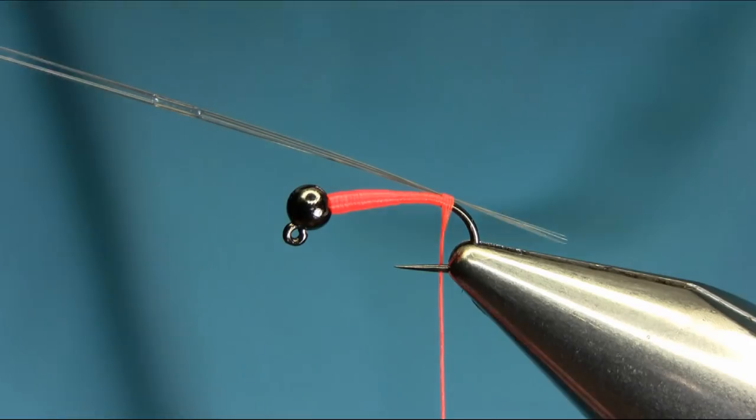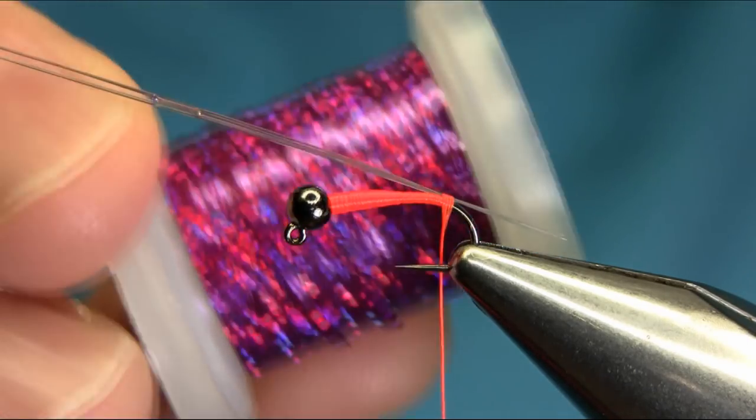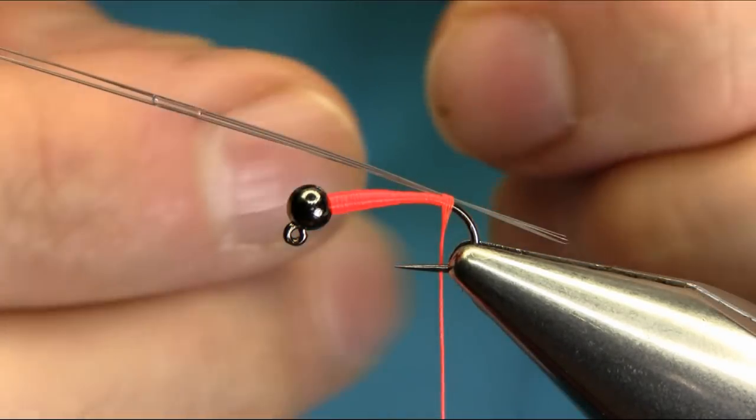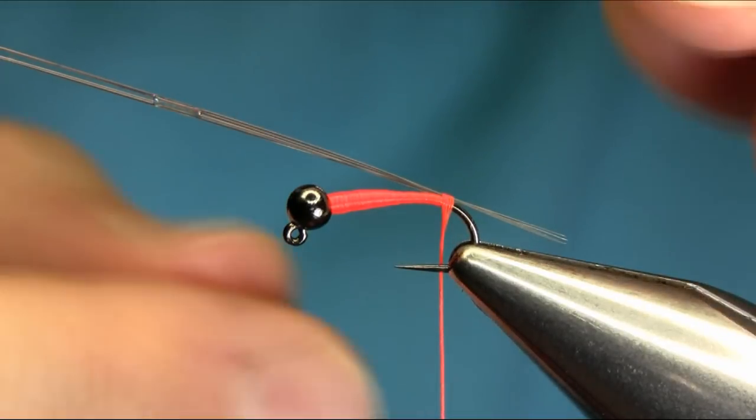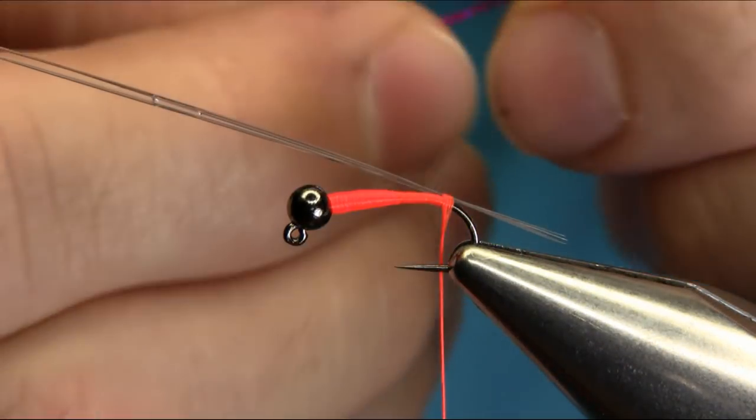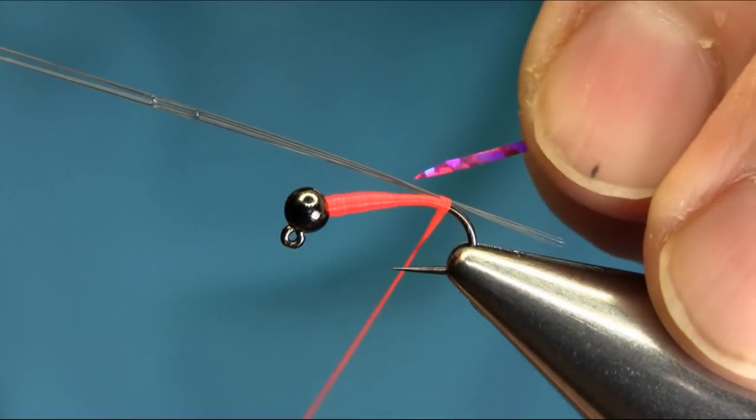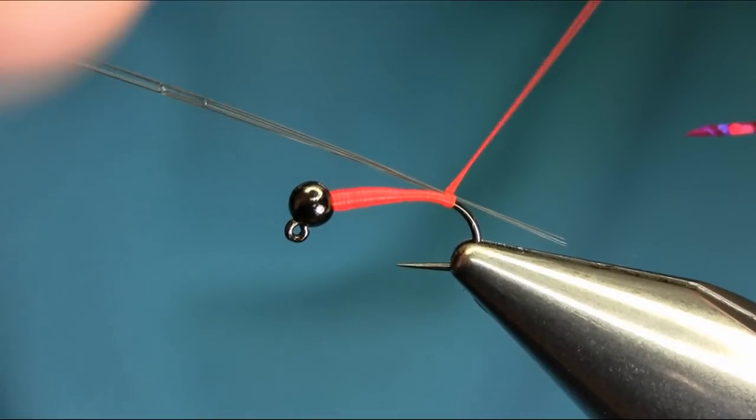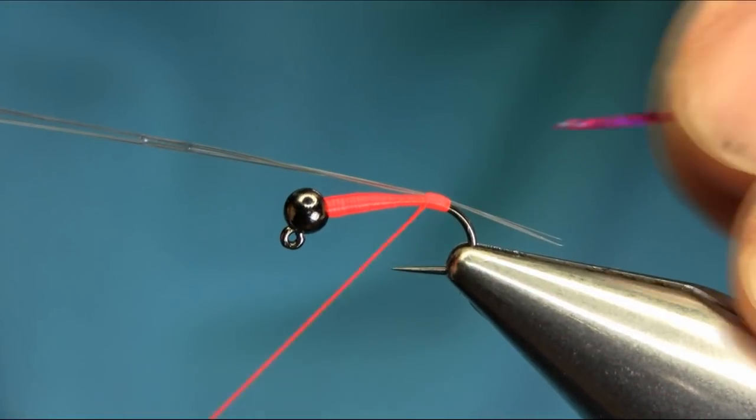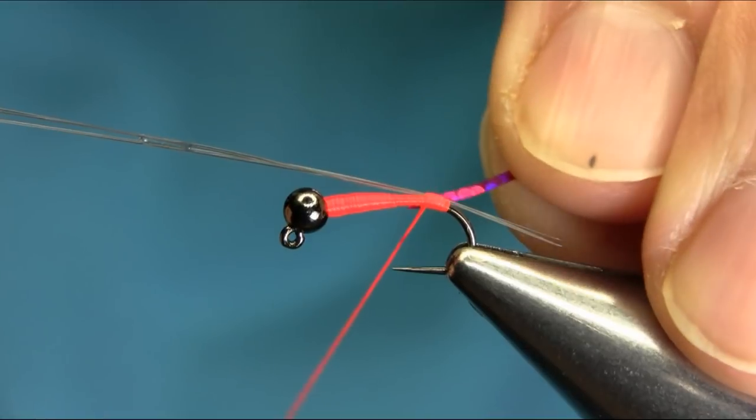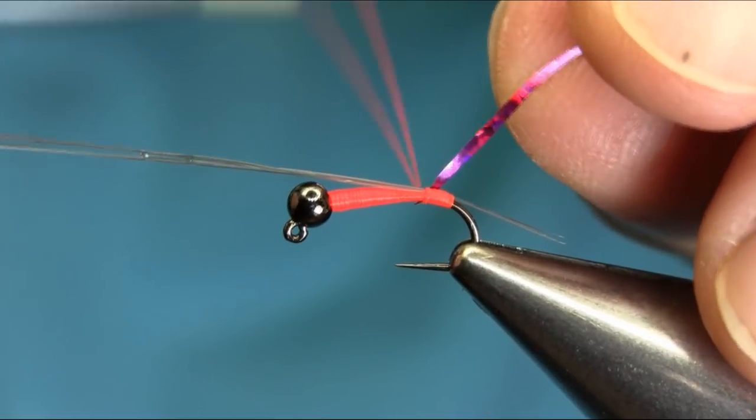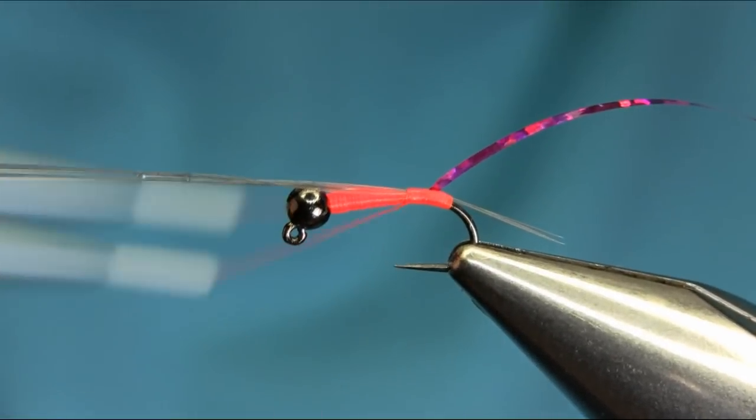For the body I'm using a purplish holographic tinsel, medium size. You can buy that from any tackle shop. Cut it at an angle as you can see, and catch it. I'm going to make a little tug in here and then cut this tinsel, making sure it's sitting properly, and then use your touch and turn gently.